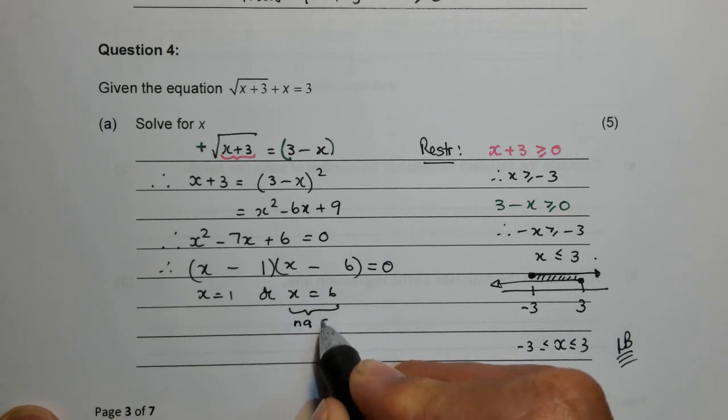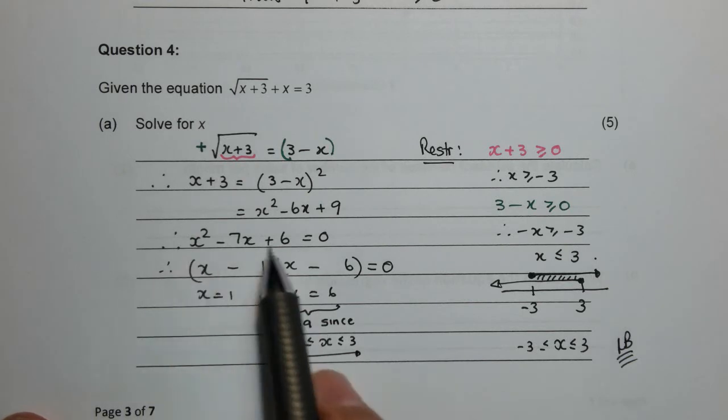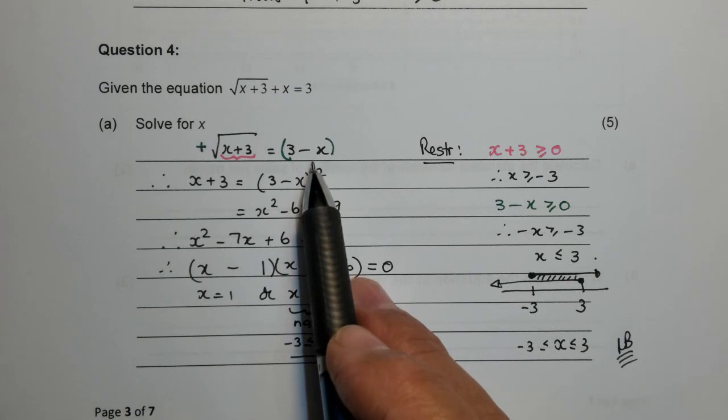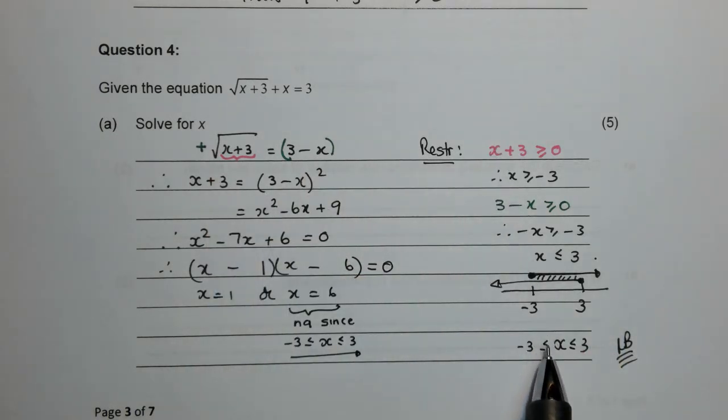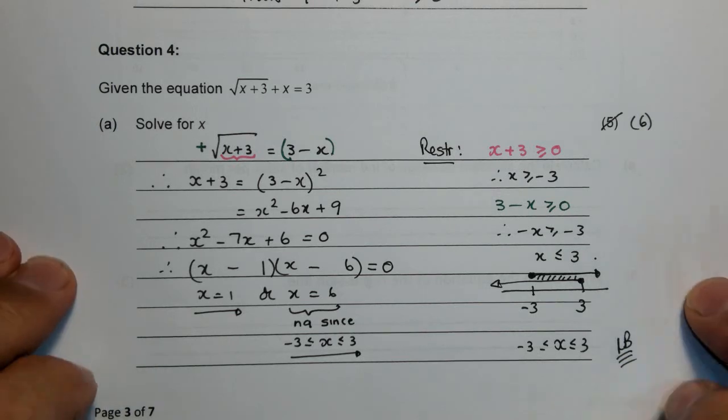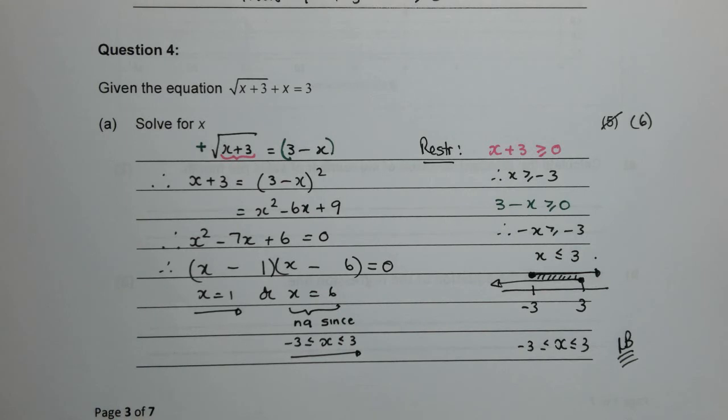What do we get? We get that x is 1 or that x is 6. Now folks 6 lies to the right of 3, 1 lies in the middle there. So this answer here is not applicable but why? Give me your reason. Since x is only allowed to lie between 3 and minus 3. Yes it is a solution for that equation but that wasn't the initial question, so based on the restrictions on the initial question this answer has to be omitted. The only answer that is true is 1.